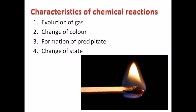The second characteristic is change of color. Certain chemical reactions are characterized by a change in the color of the reactant. For example, if there is a blue copper sulfate solution in a beaker and you add an iron nail, you will notice that slowly the blue color of the copper sulfate fades and turns green — so there is a change of color.